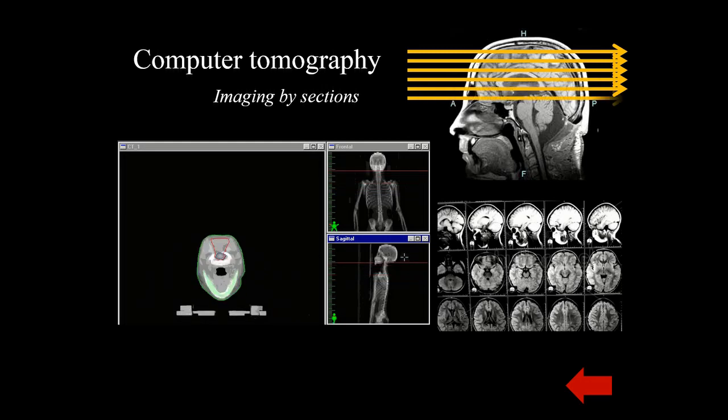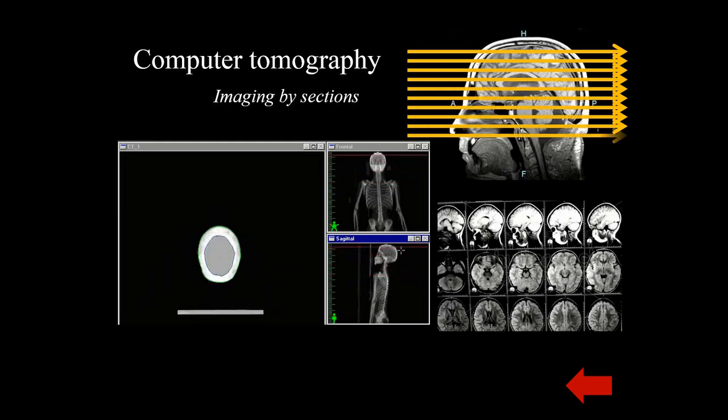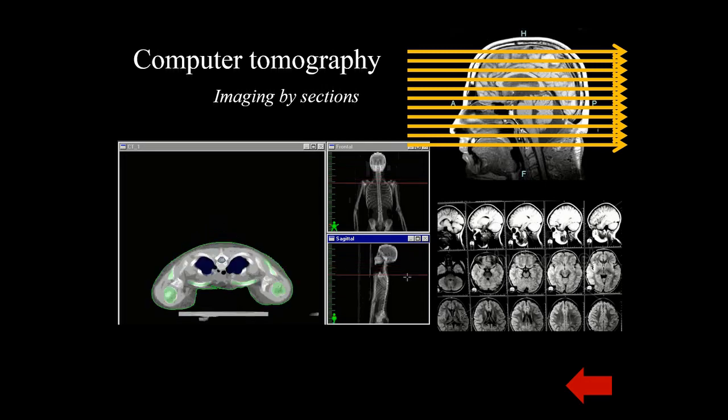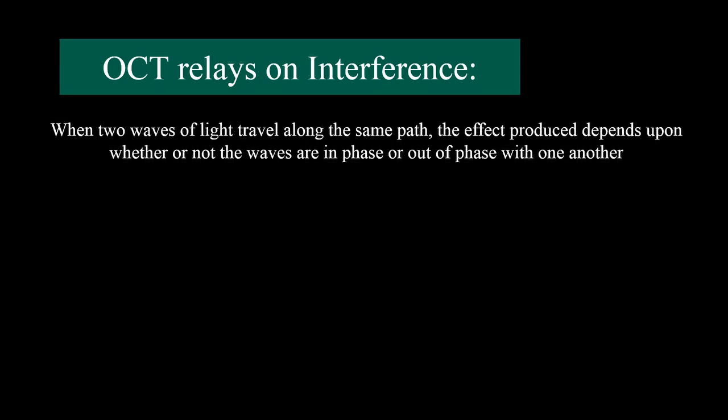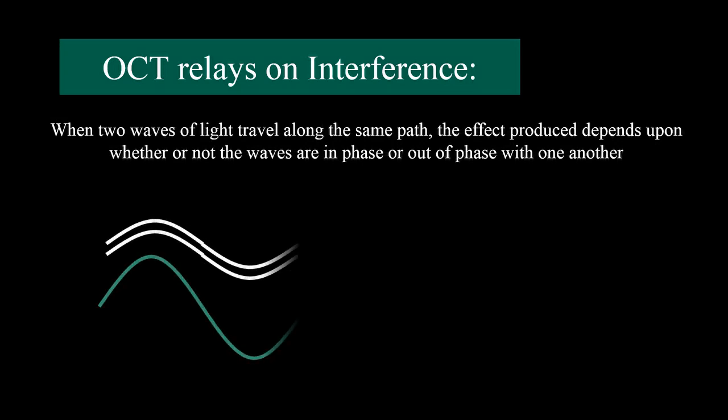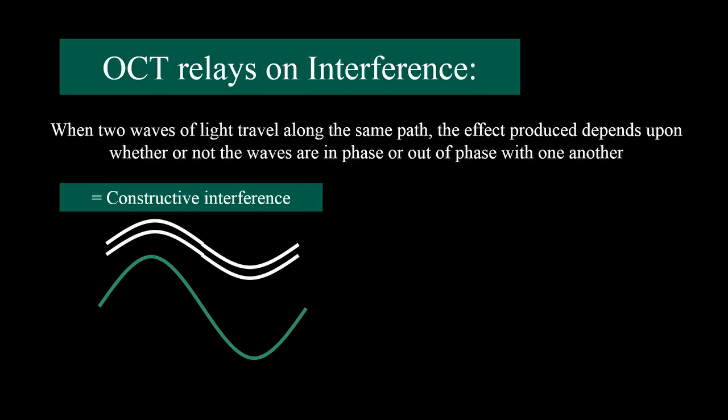Tomography means imaging by section, like when we request a CT of the brain or body. OCT relies on interference: when two waves of light travel along the same path, the effect produced depends on whether the waves are in phase or out of phase with one another. When they are in phase, we have constructive interference — they add to one another.